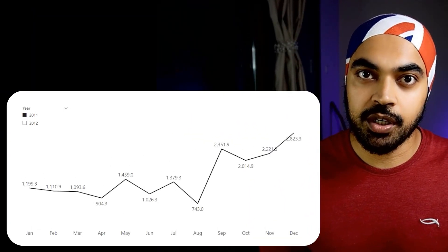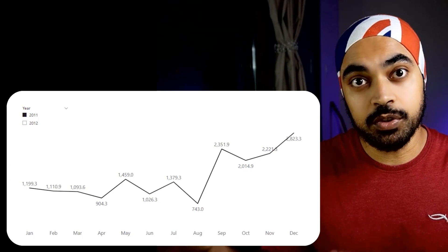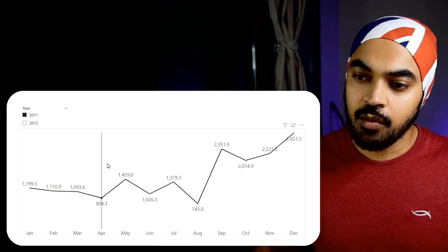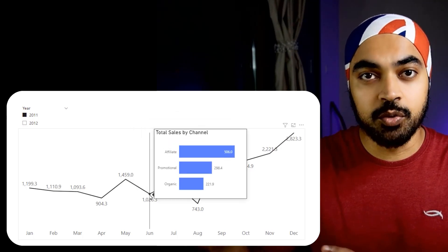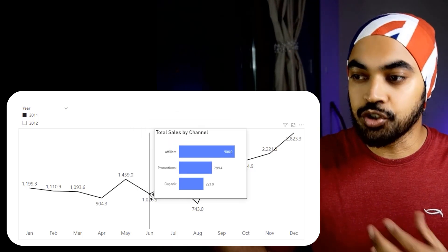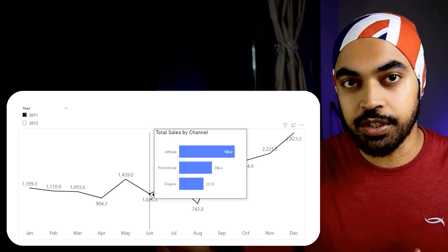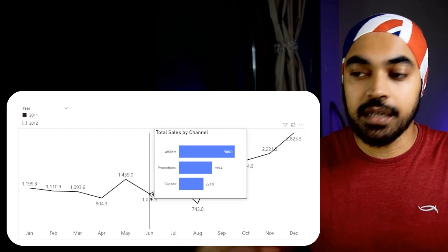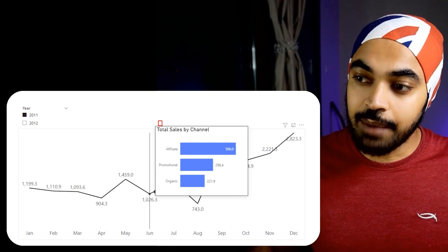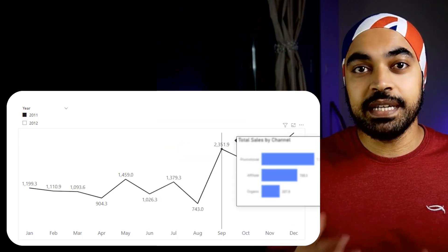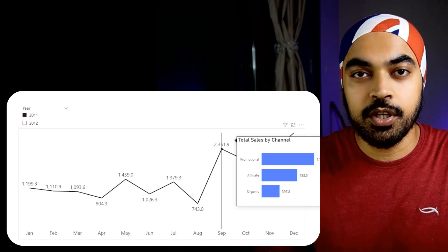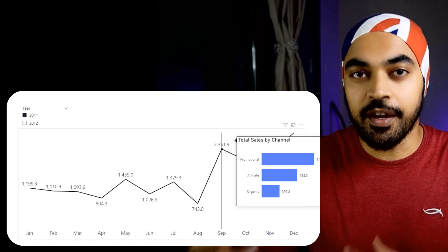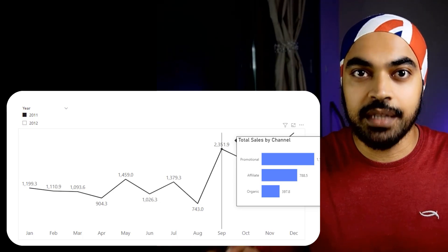I'm in Power BI and I've built a very simple line chart here, along with a custom tooltip on top of that. Once I hover my mouse on any particular month I get to see a tooltip showing the distribution of sales across the three channels. If you don't know how to create a custom tooltip like this, I'd suggest watching a video from Reed Havens — he's done a brilliant video on customizing tooltips.